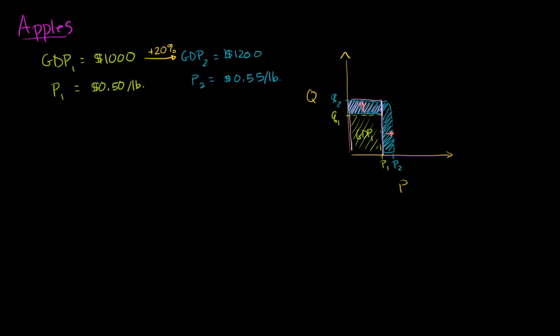If we really want to figure out how much more productive the country got, and we still want to measure GDP in dollars, maybe we can measure year two's GDP using year one's prices. If we multiply year two's quantity by year one's prices, we get a rectangle that shows the incremental GDP in year one prices due to quantity — and that's what we care about, total productivity.